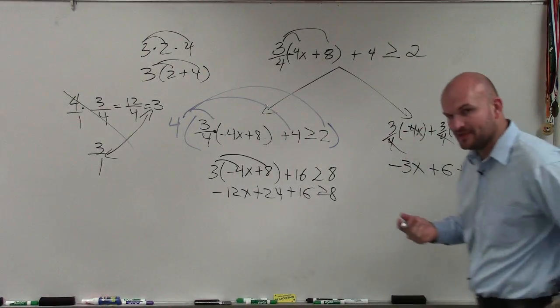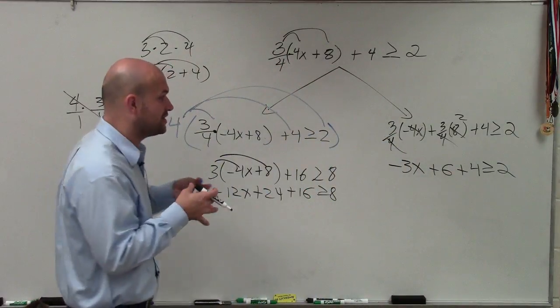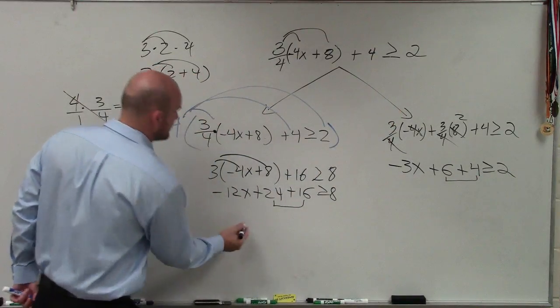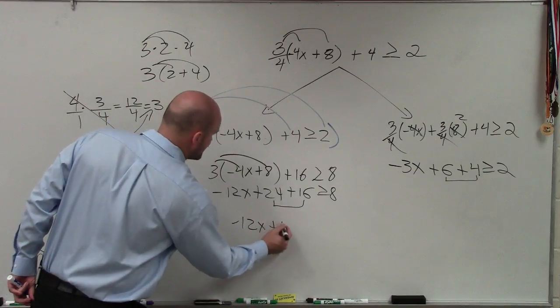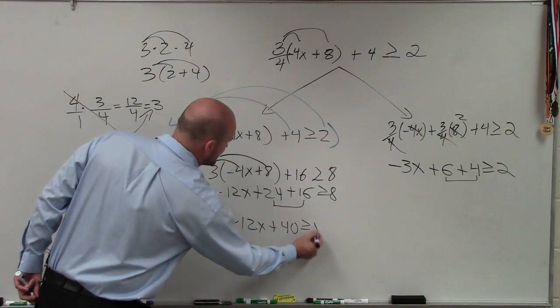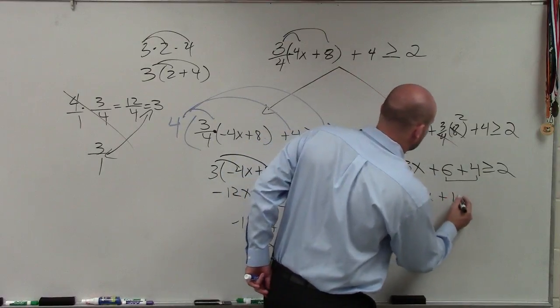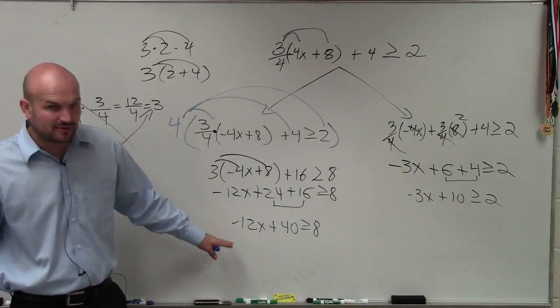Now, the next step is, again, before we get to this, we've got to make sure that we combine our like terms. You guys see we have these two terms right here and these two terms right here. So I have -12x. This becomes 30, which is plus 40 is greater than equal to 8. Over here, I could say -3x plus 10 is greater than equal to 2. Now, I have simplified it down to a two-step equation.